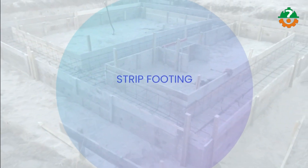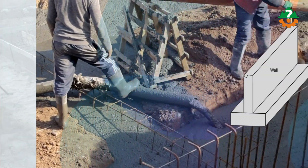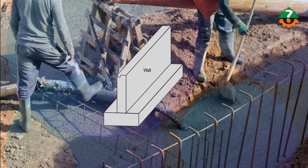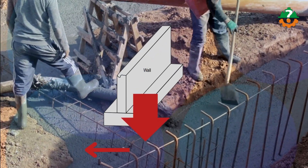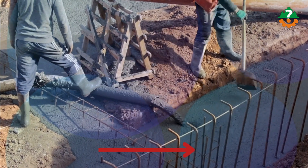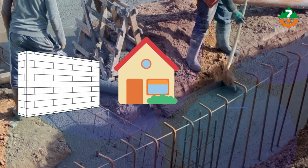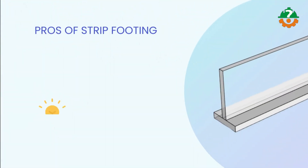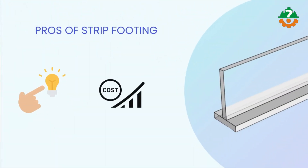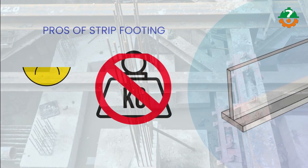First, the classic strip footing. These long, continuous concrete pads distribute the load of the building over a larger area, making them ideal for supporting walls in residential and light commercial construction. Pros include simplicity and cost effectiveness, but they may not be suitable for heavily loaded structures.